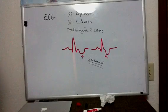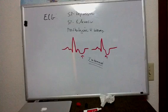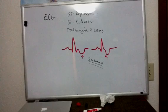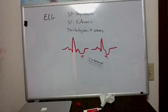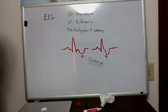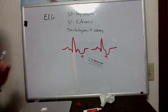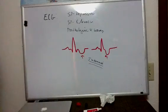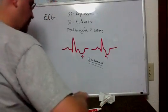ST depression can also be due to certain medications — digoxin, for example, can produce what they call an ice cream scoop depression pattern. ST depression can also be the manifestation of a reciprocal change, where I have ST elevation in certain leads and depression in leads opposite those leads. ST depression can also indicate the presence of a certain kind of heart attack known as a non-ST elevation MI, or NSTEMI — previously known as a non-Q wave MI — which is a very special type of acute coronary syndrome. But generally speaking, ST depression indicates some sort of ischemia occurring.